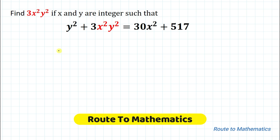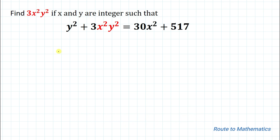Hello everyone, welcome to Route to Mathematics. In this video we are going to solve this interesting Mathematical Olympiad question. The given question is: find the value of 3x²y², if x and y are integers such that y² + 3x²y² = 30x² + 517. We are asked to find the value of 3x²y².